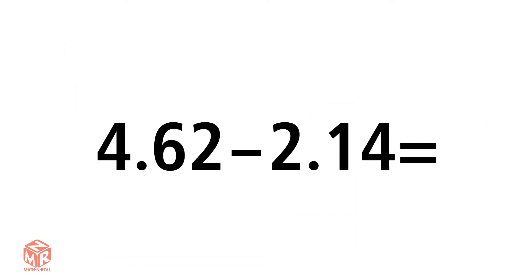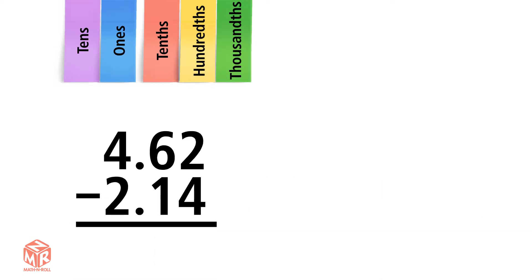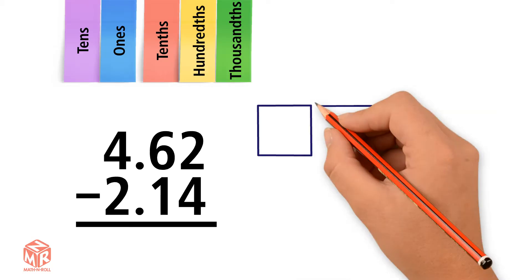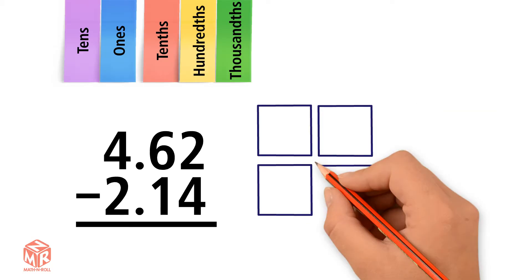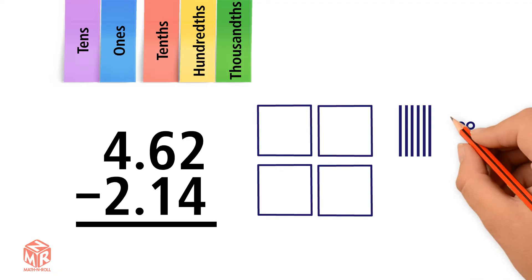Let's do another example: 4.62 minus 2.14. We start by lining up the decimal points. Let's draw 4.62. 4.62 has 4 ones, 6 tenths, and 2 hundredths. We subtract from right to left, so we start with the hundredths.